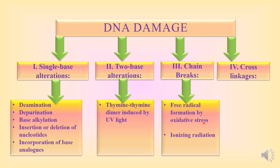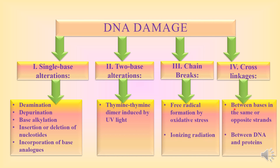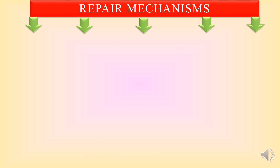Chain breaks are caused by free radical formation due to oxidative stress, and also by ionizing radiations. Cross linkages are formed between bases in the same or opposite strands, and may also be formed between DNA and proteins — for example, the histone proteins. So these are the four types of DNA damage: single base alteration, two base alteration, chain breaks, and cross linkages.